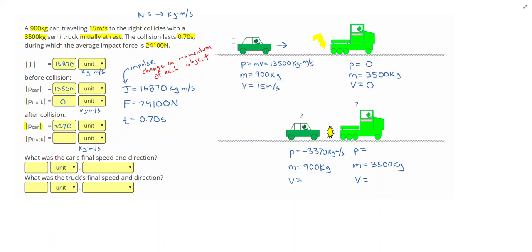For the truck, I know that however much momentum the car lost, that's what the truck is going to gain. So I can take the truck's initial momentum of zero and add the impulse and get 16,870 kilogram meters per second. That will be my next answer.